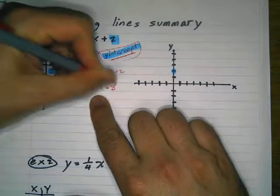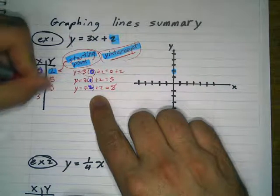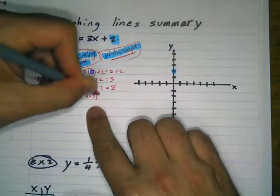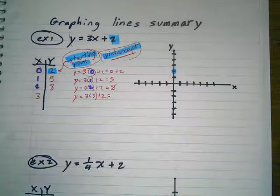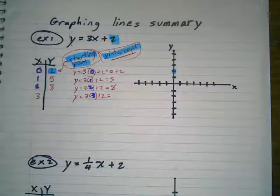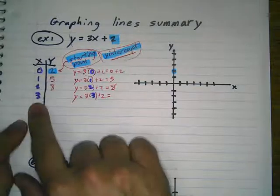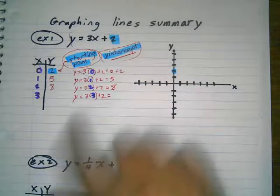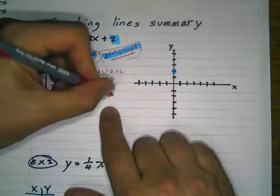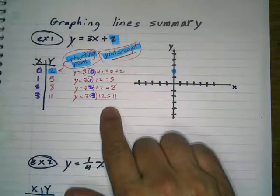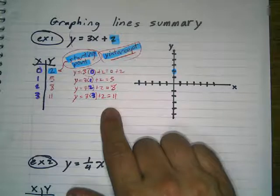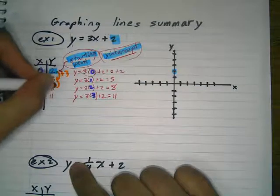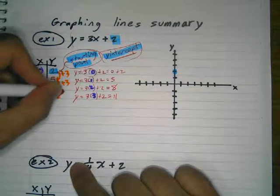Now, hopefully you start seeing a pattern. Let's do one more: y equals 3 times 3 plus 2. So if I plug in 3 for x, I have 3 times 3 plus 2 — 3 times 3 is 9, and 9 plus 2 is 11. One of the things you should start noticing is that to get to the next number, we added 3 each time. Because 2 plus 3 gives me 5, 5 plus 3 gives me 8, and 8 plus 3 gives me 11.